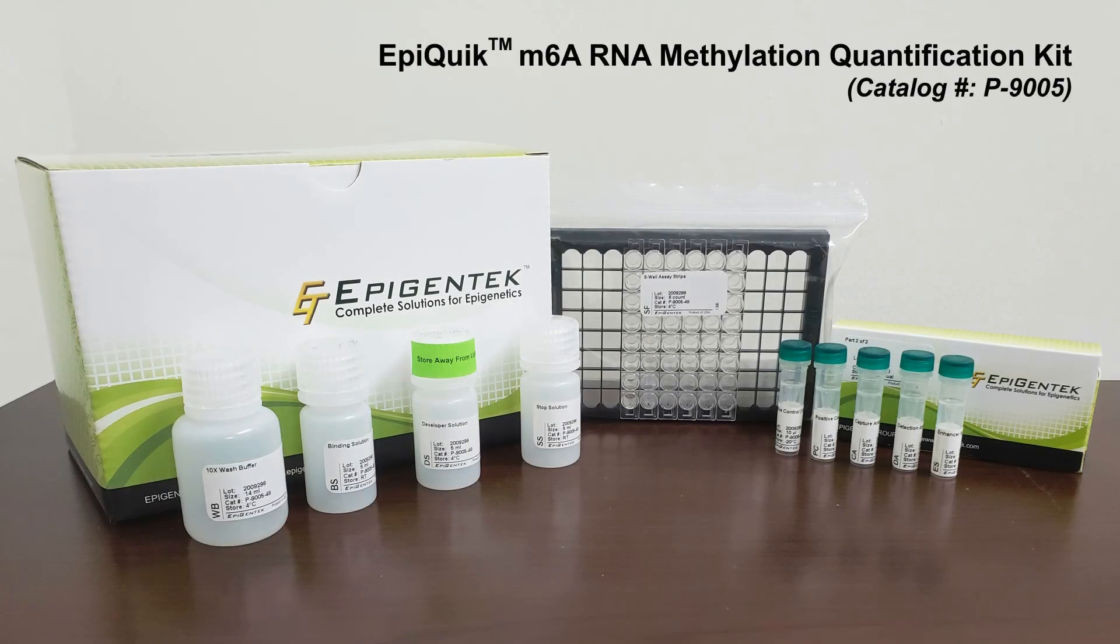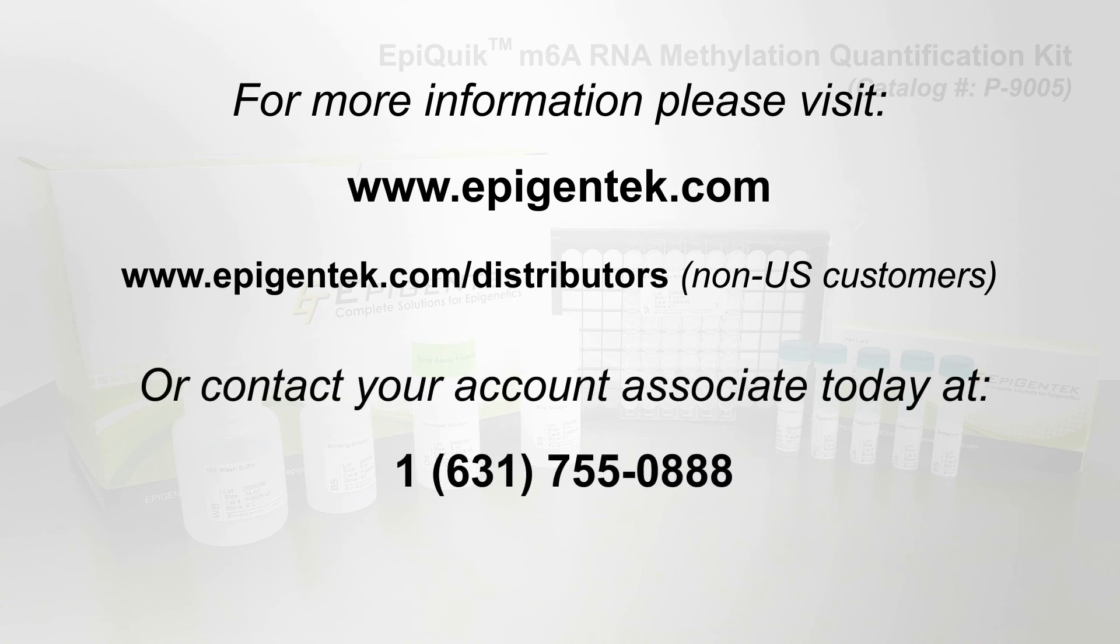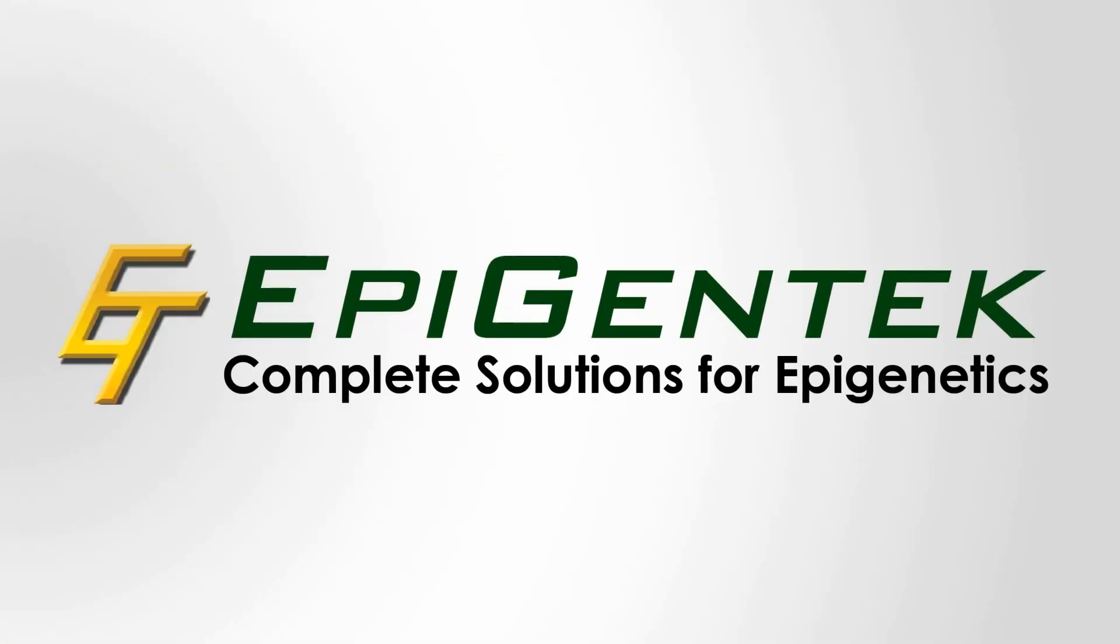To learn more about the EpiQuick M6A RNA methylation quantification kit, catalog number P9005, or ways you can order, please visit www.epigentech.com or epigentech.com/distributors for non-US customers or call us at 1-631-755-0888.